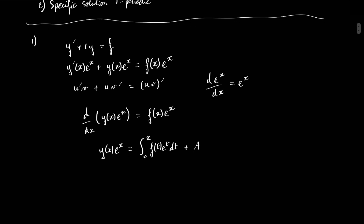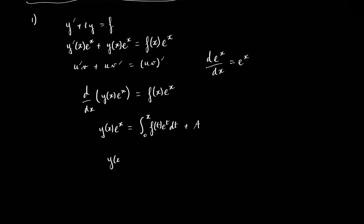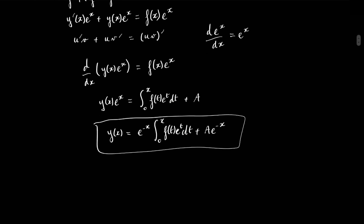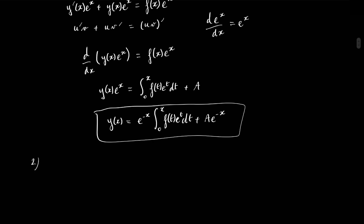In other words, the solutions of this differential equation are y(x) equal to exponential of minus x times the integral from 0 to x of f(t) exponential of t dt, plus a times exponential of minus x. Now, as we said, the function f is supposed to be T-periodic. For those who don't know what this means in practice: for any value x, you have the equality f(x + T) equals f(x). A good example of a T-periodic function is the sine and cosine functions, which are 2π-periodic.